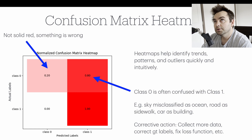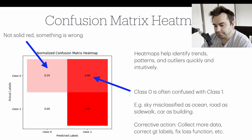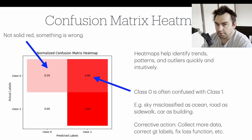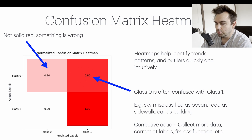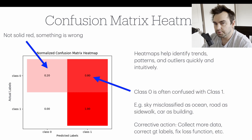Class zero is often confused with class one — this could be something like roads misclassified as sidewalks, typically classes similar in nature or mislabeled by annotators. To correct this, we can collect more data for these two classes to make it clear to the model which class is which, correct the ground truth labels by sending data back to labelers or fixing them ourselves, or fix the loss function by assigning more weight to these problematic classes.